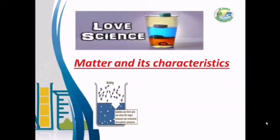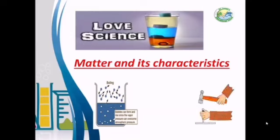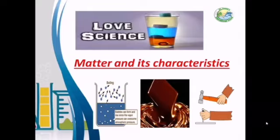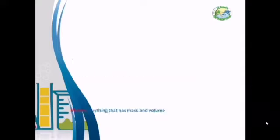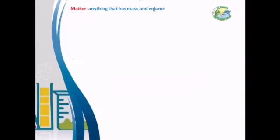Matter is everything around you. We can say that the chair is matter, the table is matter, the door is matter — so it is everything around you. Or we can say that matter is anything that has mass and volume, or anything that has mass and occupies a part of space. There are many objects around you. How can we distinguish between them? How can we differentiate between many substances?